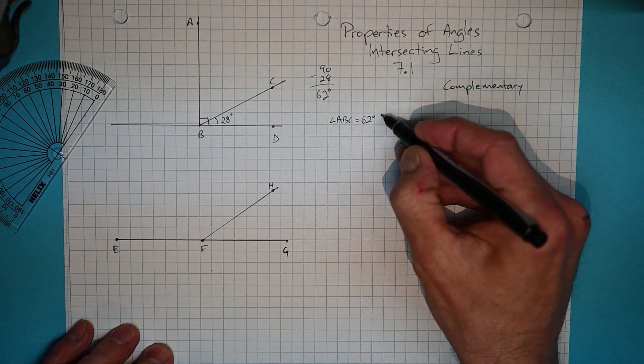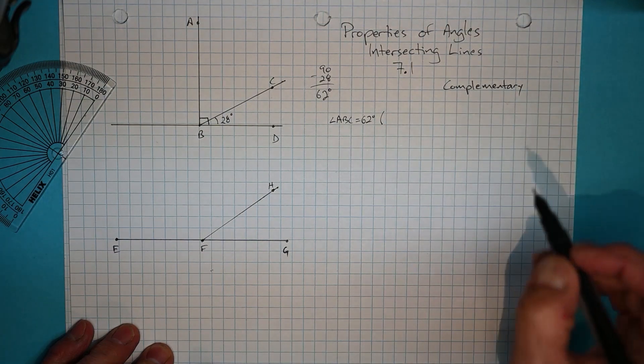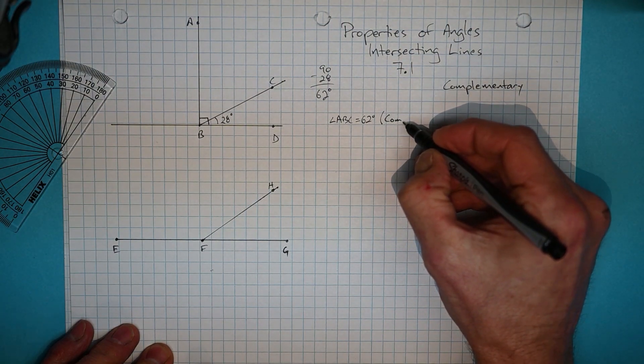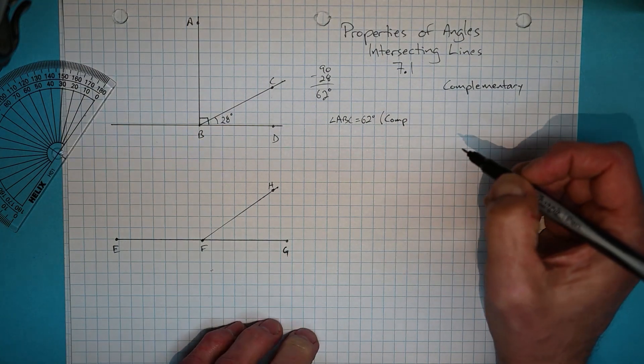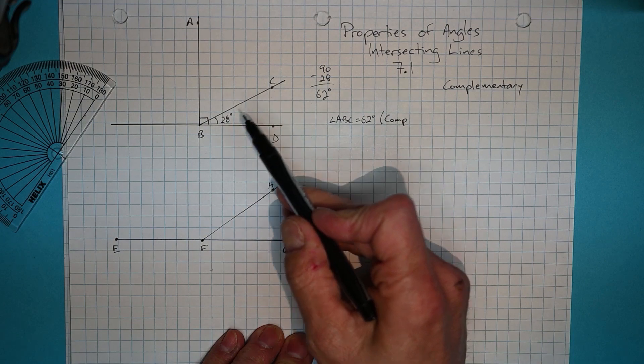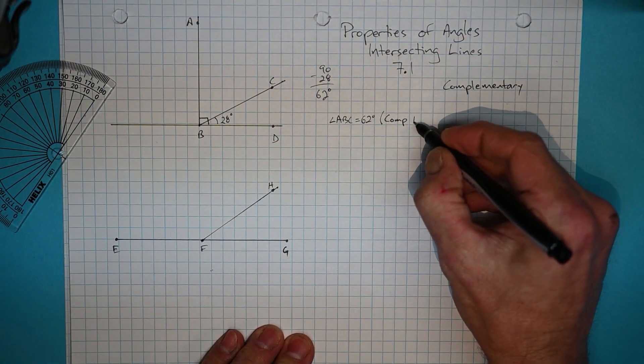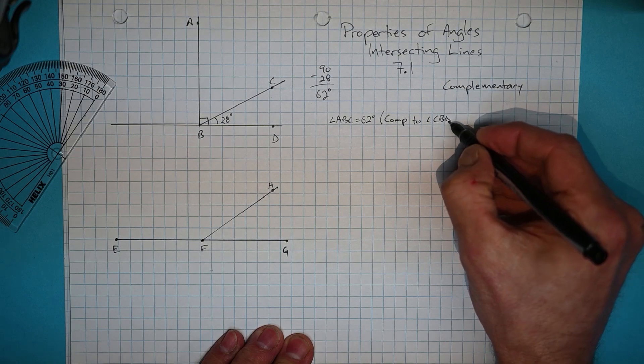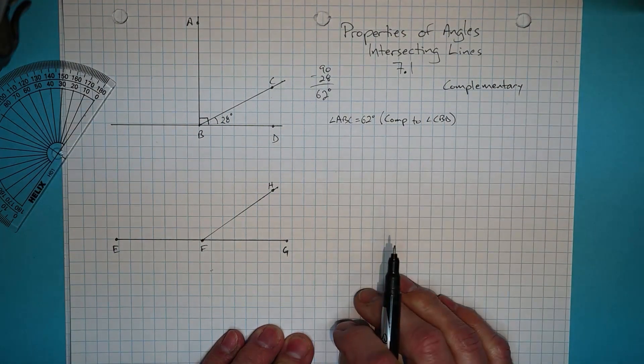And we know this because it is complementary, and we're going to just use short forms because otherwise this will get tedious very quickly. It's complementary to angle CBD. So that's how we can show our thinking on that.